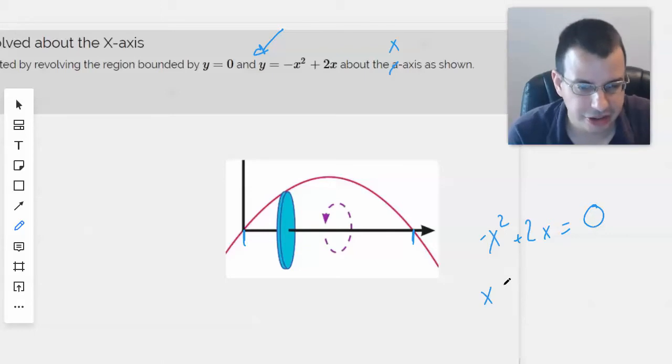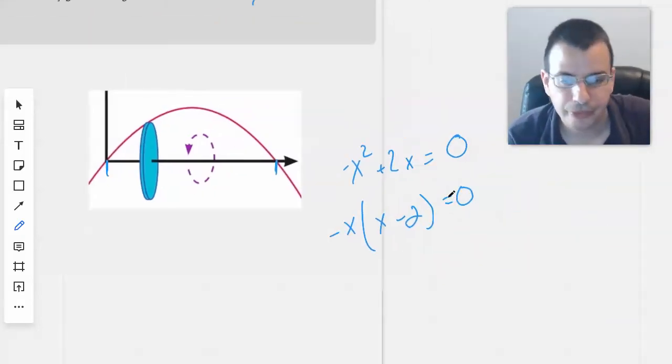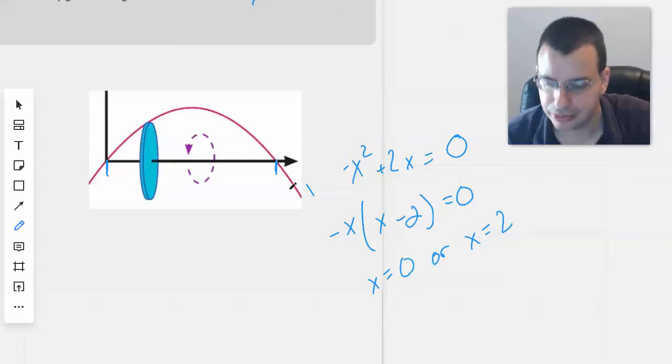Makes sense. So we'll factor out an x or factor out a negative x. Does that work? Maybe. Equals 0. Therefore, x equals 0 or x equals 2. Yep, I'm good with that. So this is 2. This is 0.